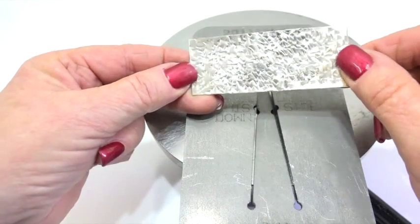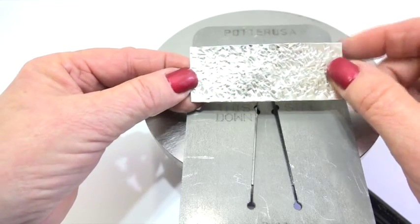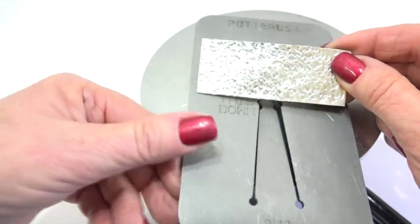I finished texturing my sterling silver sheet. Now I'm getting ready to put it into the pancake die.